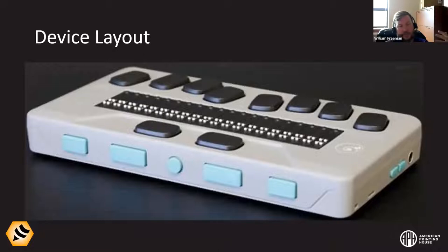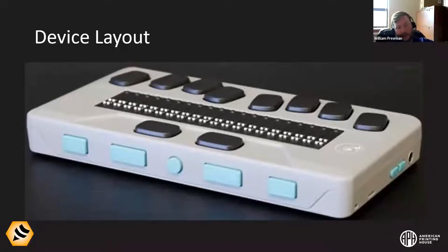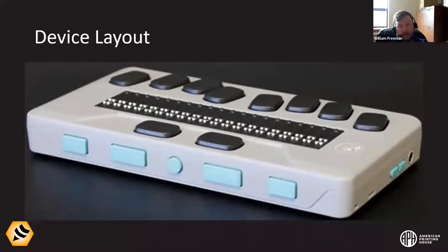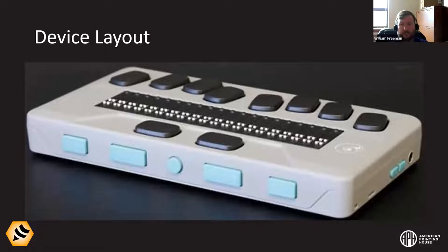We're going to talk about the menu structure. One thing that can intimidate people, especially when they're new, is dealing with a linear menu structure. As sighted people, we're used to spatially laid out menus — seeing all options at once. With Braille displays and a lot of accessible tech, whether it uses Braille or sound, you have to get used to a linear structure and exploring that structure. But we'll get into it.